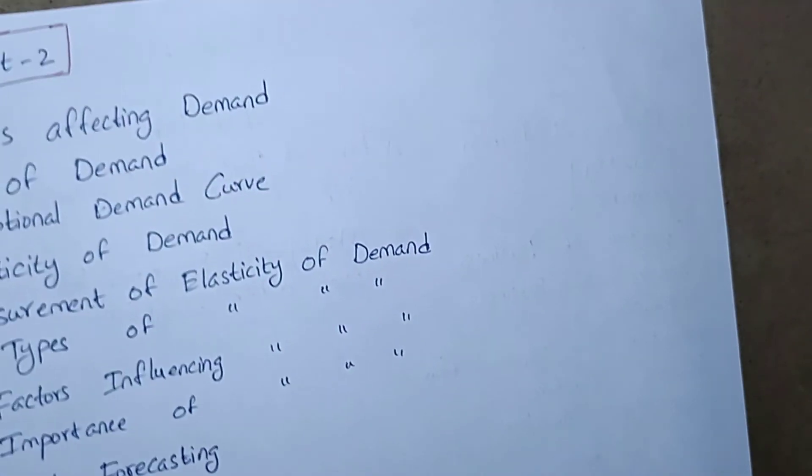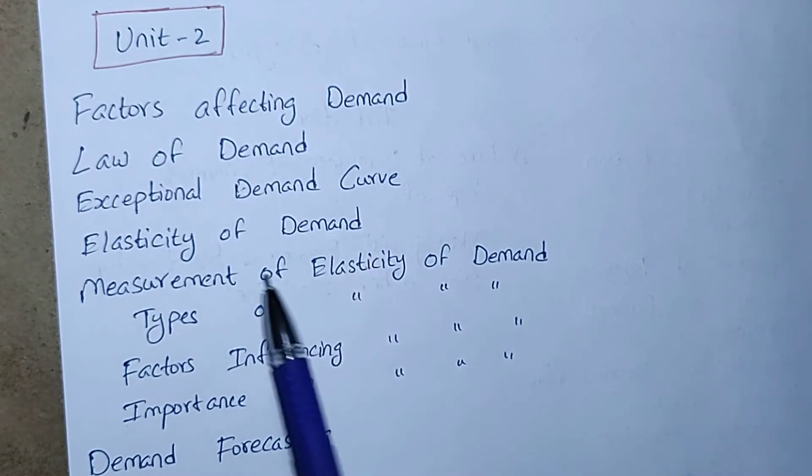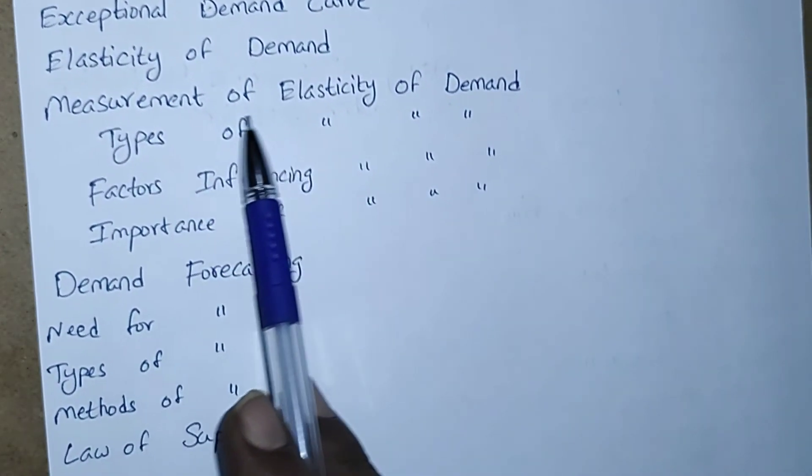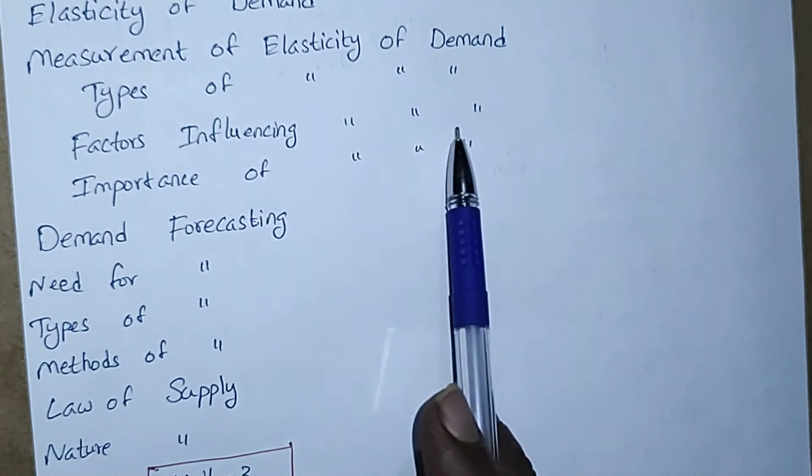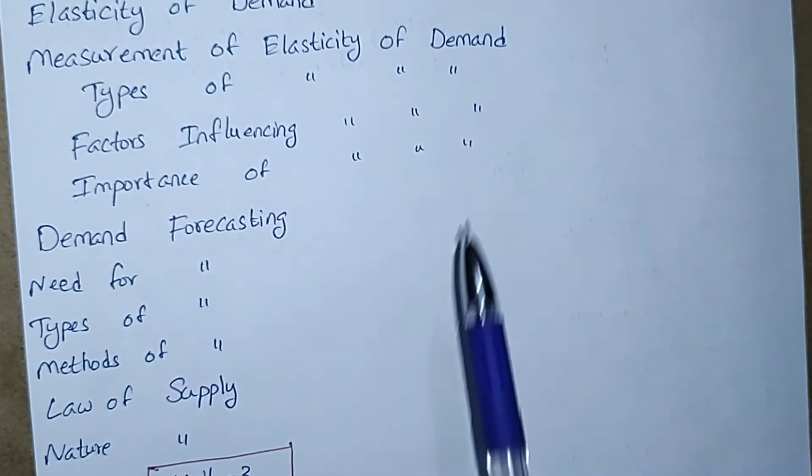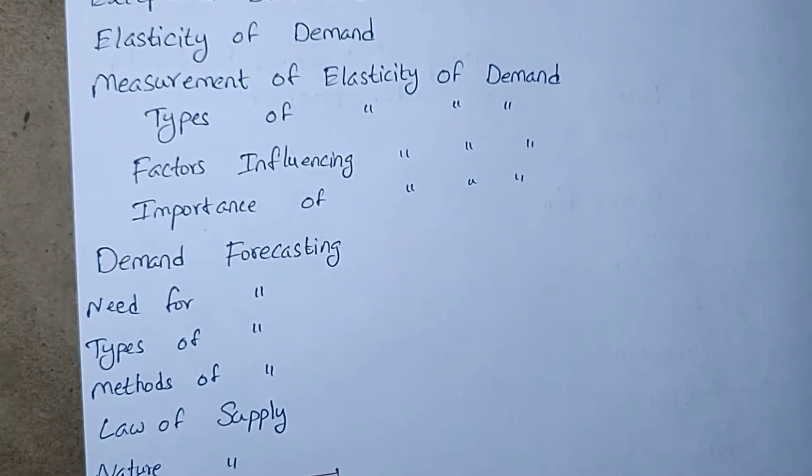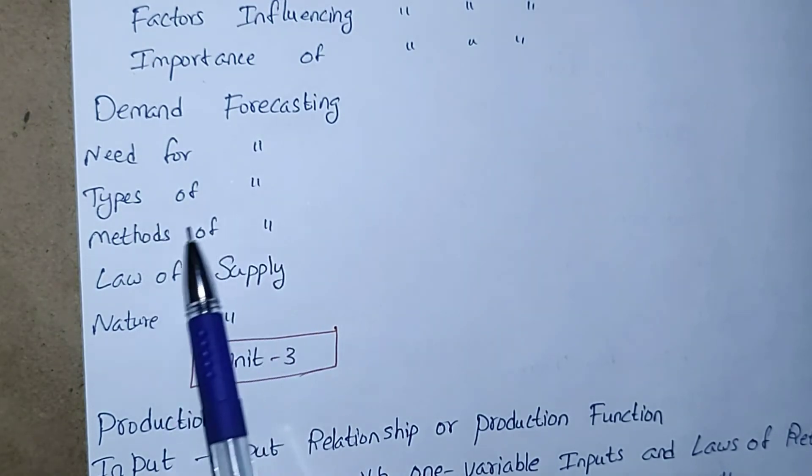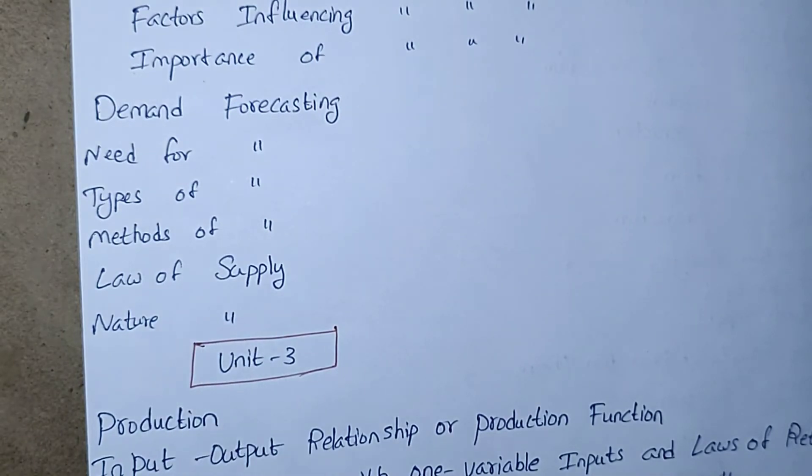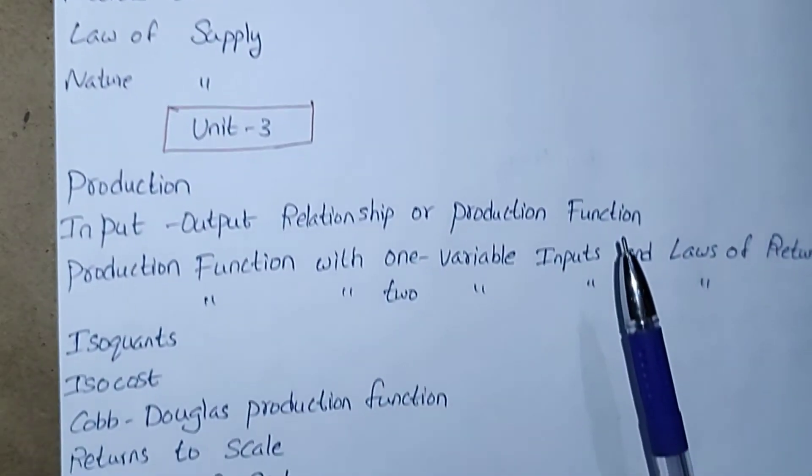Now we will move to the second unit. This is the second unit: factors affecting demand, law of demand, exceptional demand curve, elasticity of demand, measurement of elasticity of demand, types of elasticity of demand, factors influencing elasticity of demand, importance of elasticity of demand. Each and every topic may get a question regarding advantages and disadvantages, limitations, merits and demerits of the subtopic. Also study demand forecasting, need for forecasting, types of forecasting, methods of forecasting, law of supply and nature of supply. This is regarding the second unit.